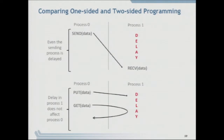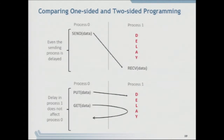To compare one-sided with two-sided: in the two-sided model, rank zero calls send with a buffer, count, and data type, and there's a receive somewhere that also specifies the memory where data will be copied. There's some delay, and even the sender may get blocked until the send completes. In the one-sided model, rank zero does a put of some data; it gets stored without rank one calling any function on that side. Similarly, get means fetch data from a specific location and return it to rank zero. It's somewhat like a non-blocking communication model, but it doesn't involve a function call on the target side except for synchronization.